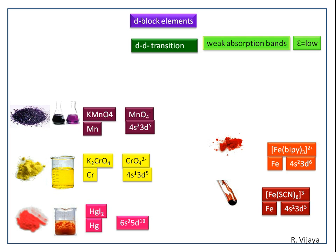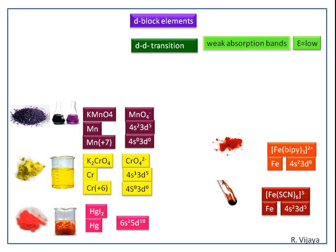Now we check the reason in these compounds. In potassium permanganate, manganese exists in the +7 oxidation state. We see the valence electronic configuration of manganese in the +7 oxidation state. Similarly, in chromium the valence electronic configuration is shown in the +6 oxidation state. The valence electronic configurations of the ions in the remaining three compounds are also shown.